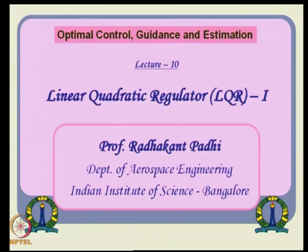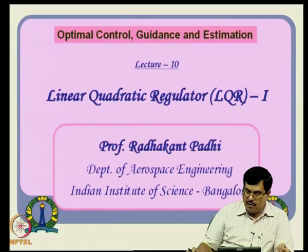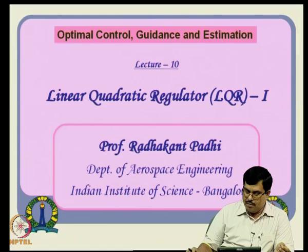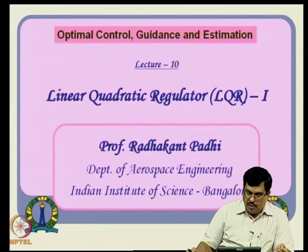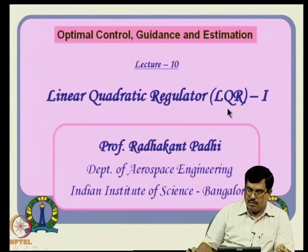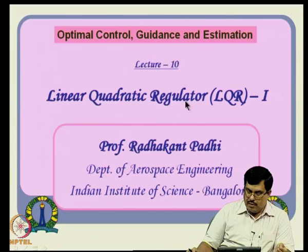That requires a lot of numerically intensive procedures. In the early 1950s and 60s, people started thinking: is there any class of problems for which we do not really need all those numerical techniques, and we can get solutions in a rather computationally efficient way, even though it is limited to a class of problems? That leads to the definition of the linear quadratic regulator problem — extensively studied and extensively utilized, and one of the very popular classes of optimal control problems found in use in industry as well.